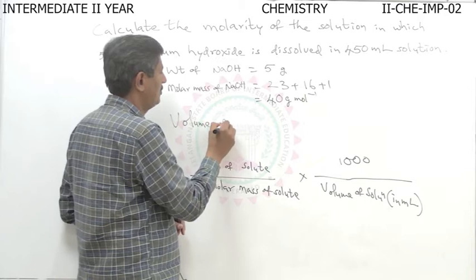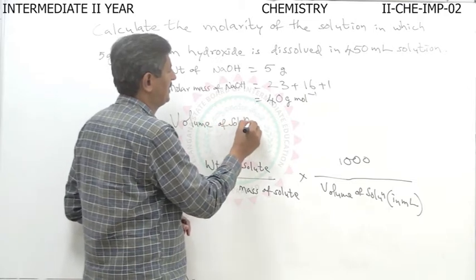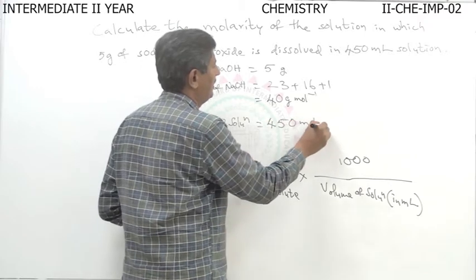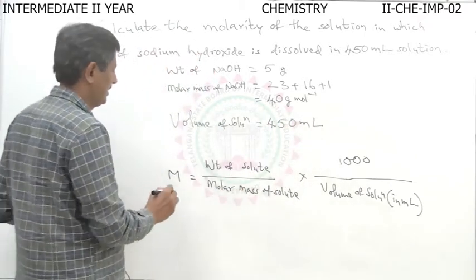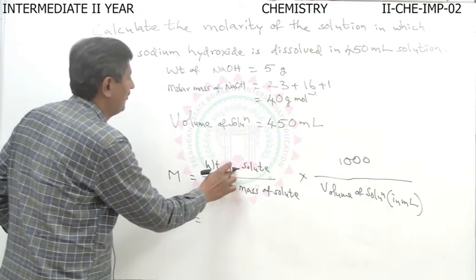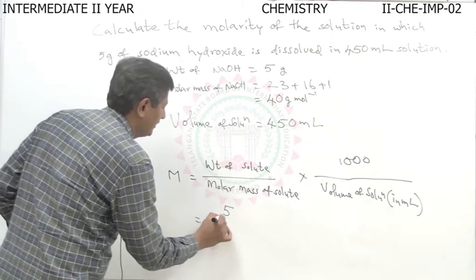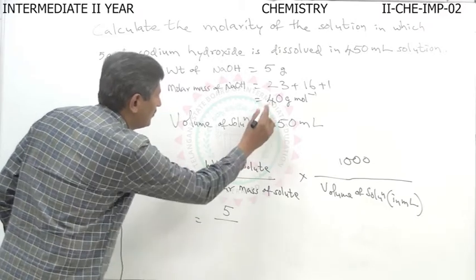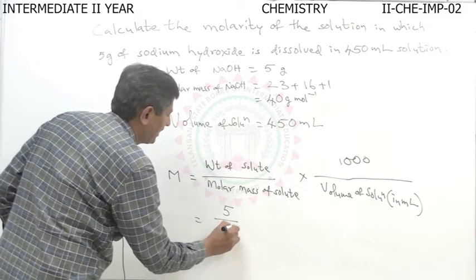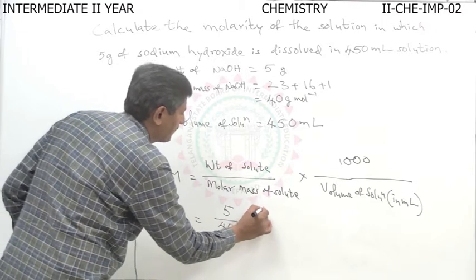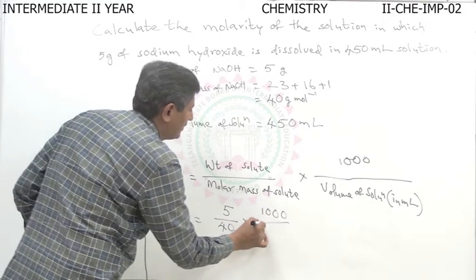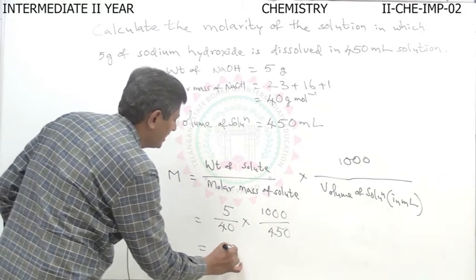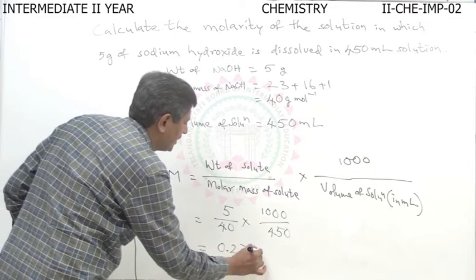The volume of solution is given as 450 mL. Substituting these values: weight of solute divided by molar mass gives 5 divided by 40, multiplied by 1000 divided by 450. By simplification, we get 0.278 molar.